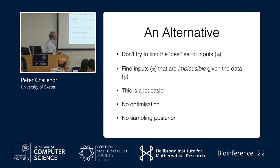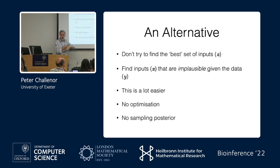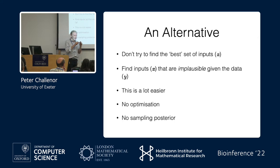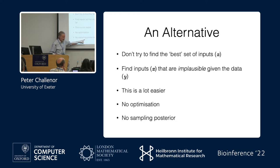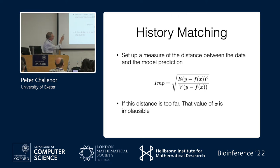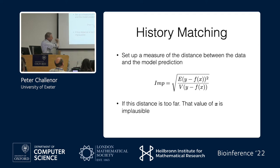The alternative is what's called history matching. We don't try to find the best set of parameters — that's hard. Instead, we find those inputs that are implausible given the data: what inputs could not give you the data? That's a lot easier — there's no optimization. All we're going to do is find all models that couldn't be anywhere near the data, and what's left has to include the best fit. There's no prior, no posterior, no MCMC — this is geometry. We set up a measure of the distance between the data and the model prediction: if that distance is too far, that value of x is implausible and we don't consider it.